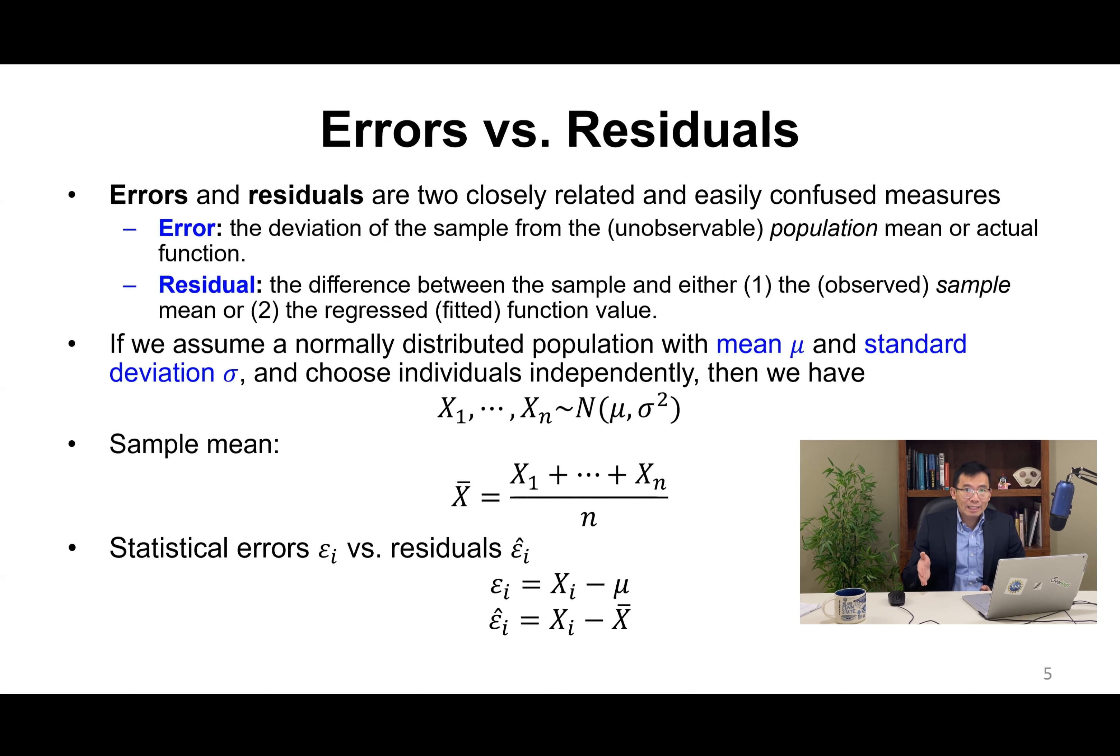Errors are not observable but residuals are observable. Residuals can be used as an estimate of errors but are different from errors. If we assume a normally distributed population with mean mu and standard deviation sigma, and choose individuals independently, then we have x1, x2 to xn drawn from the normal distribution with mean mu and variance sigma squared. We calculate sample mean x bar equals x1 plus x2 to xn divided by n. The difference is very clear: error is the deviation of each sample from the population mean, but residual is the deviation of each sample from the sample mean. We use epsilon i to represent error and epsilon i hat to represent residual.